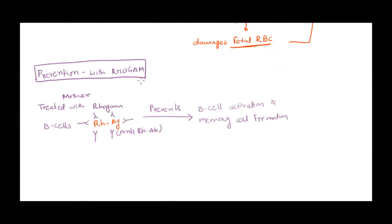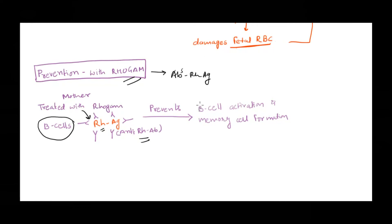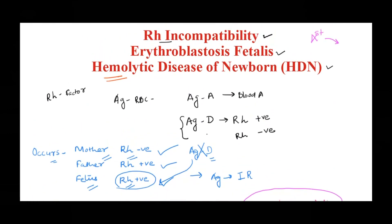RhoGAM is administered to the mother after the first delivery. RhoGAM is nothing but prepared antibodies against the RH antigen. Even before the fetal RBCs can activate the B cells, the ready-made antibodies are administered, which bind to the fetal RBCs and clear them up. This prevents B cell activation and therefore prevents memory cell formation. With no memory cells, subsequent pregnancies will not trigger antibody production. Every time this situation arises, RhoGAM — ready-made antibodies against the RH antigen — is given to clear up fetal RBCs before they activate the mother's B cells.